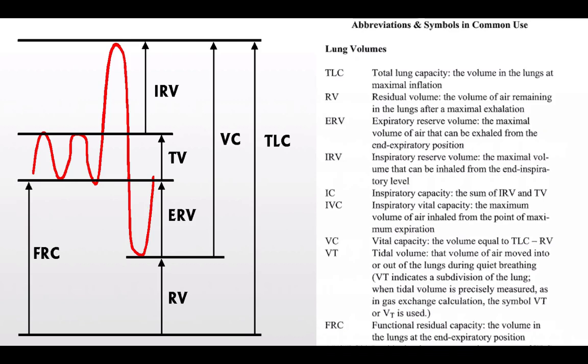Here is a graphic representation of lung volumes and capacities. At the bottom we have RV — residual volume — the volume of your lungs you cannot exhale on your own effort. The only way to eliminate residual volume would be to physically collapse your alveoli entirely.